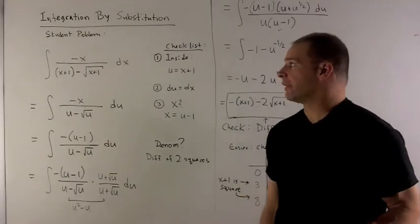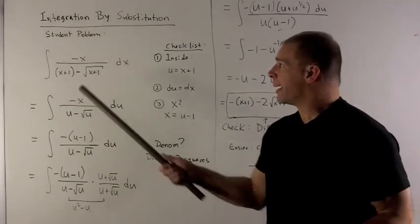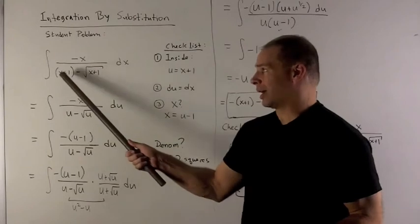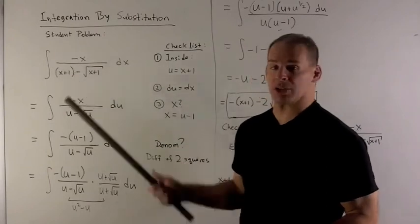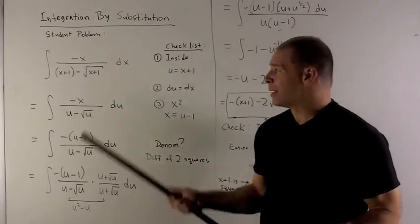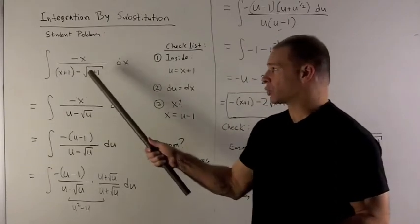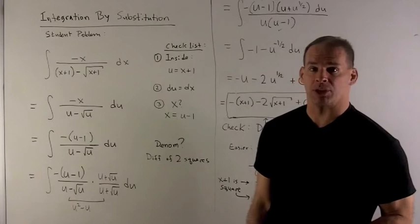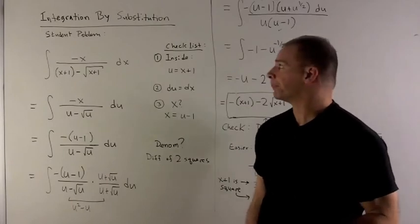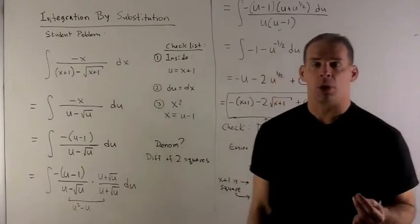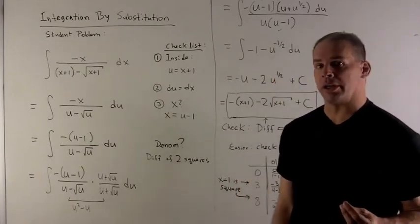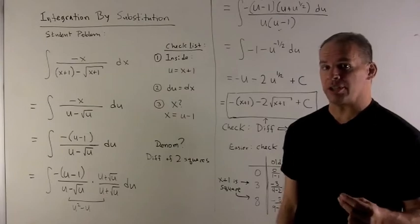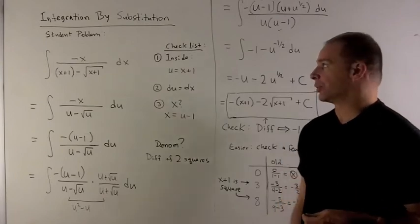I'm going to find the antiderivative of the function minus x over quantity x plus 1 minus square root of quantity x plus 1. If we notice, there's a composition going on here, so this is going to be an integration by substitution.